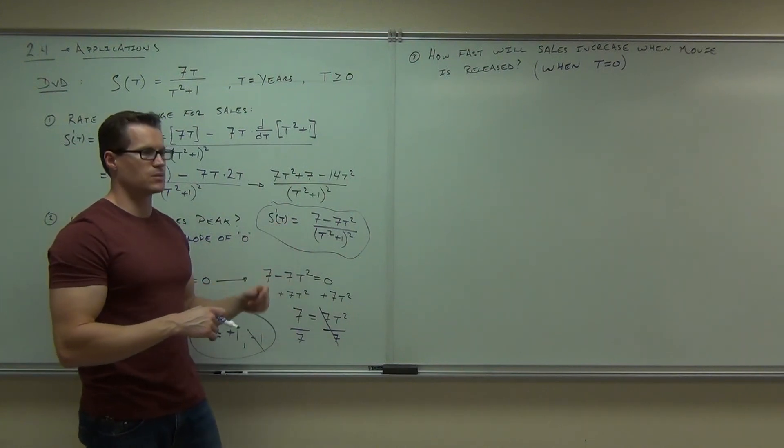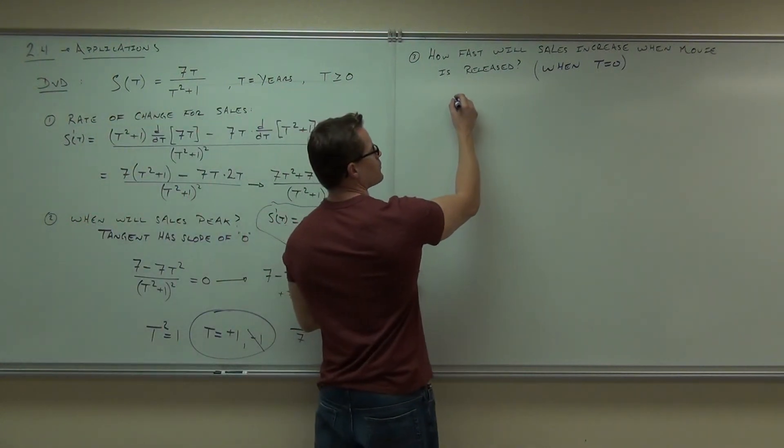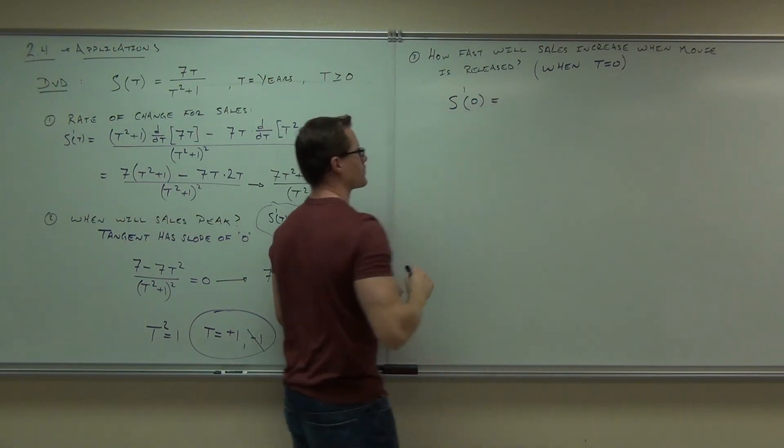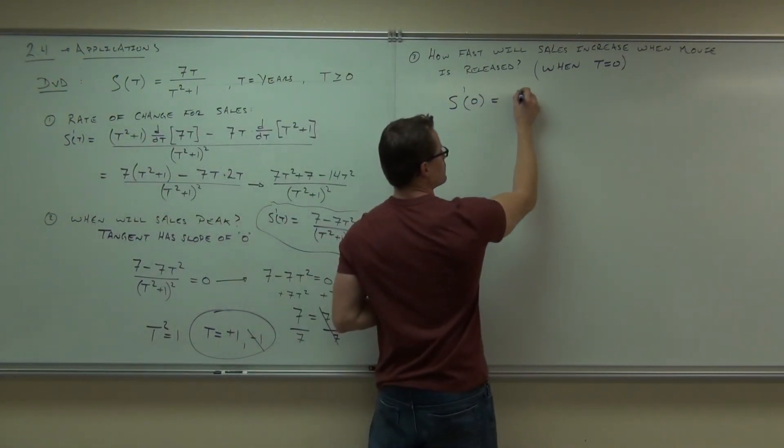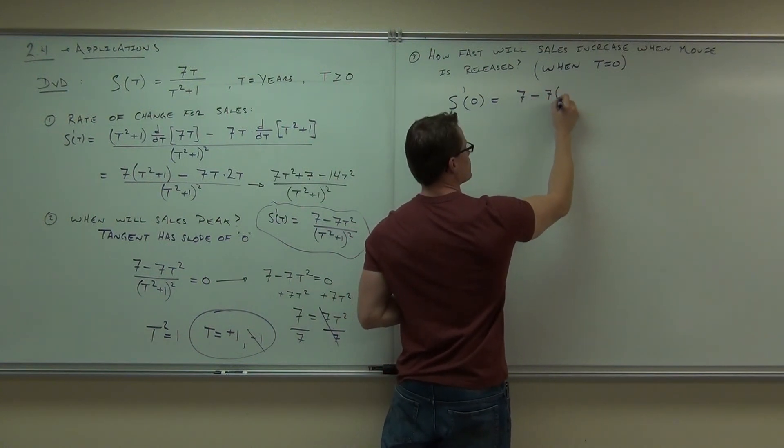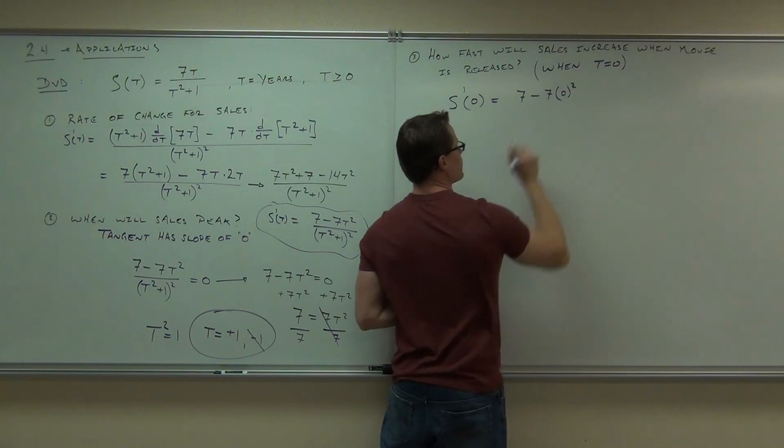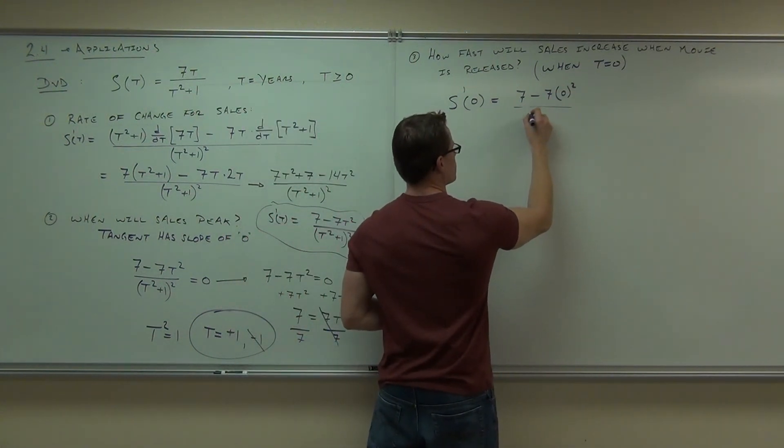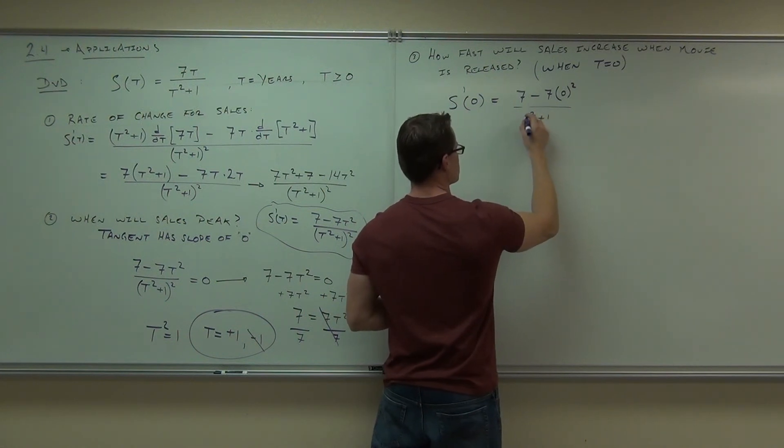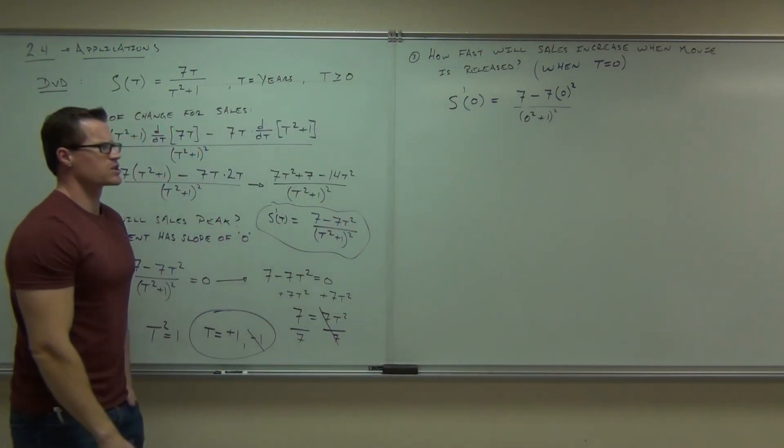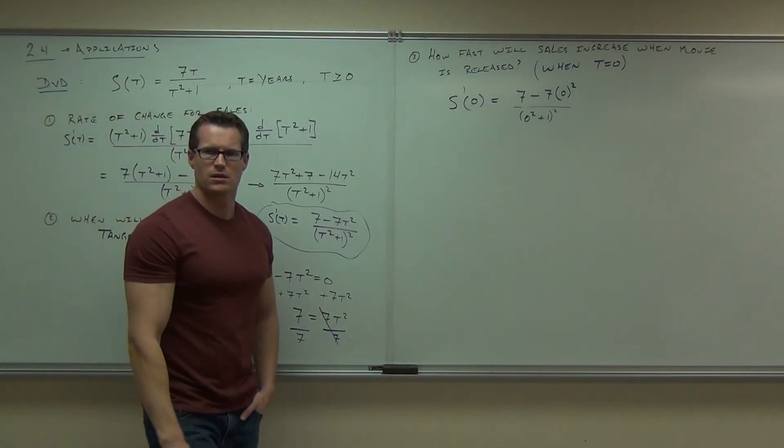Plug in 0. So we actually want to find s prime of 0 for this. That will be 7 minus 7 times 0 squared. All or whatever that is. How much is that going to be ultimately when you get down? 7.